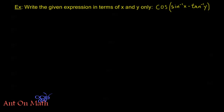Hello and welcome back to Anton Math. In this video we're going to look at some evaluating expression problems where we'll use our addition and subtraction formulas in a new way. The problem: write the given expression in terms of x and y only — cosine of sine inverse of x minus tangent inverse of y. This may look similar to chapter 6 problems, but we never had a sum or difference like this before, because we didn't have a formula that allowed us to evaluate it this way. We'll proceed similarly, just with some slight alterations.